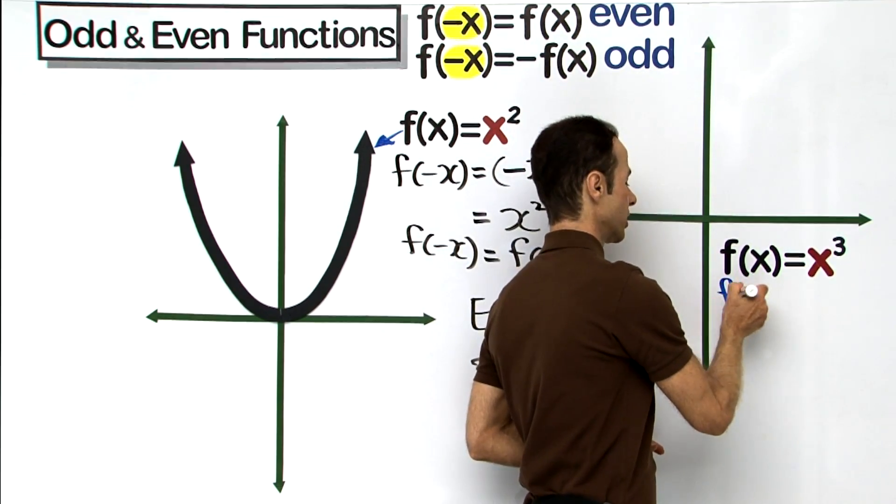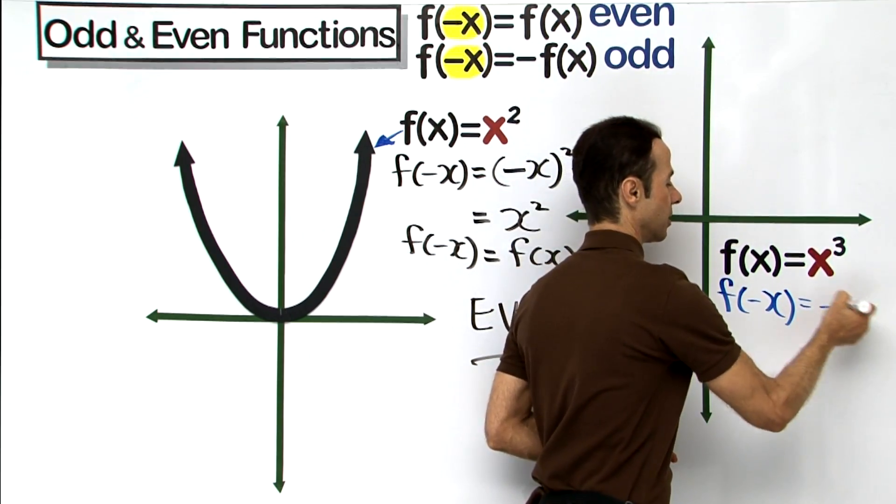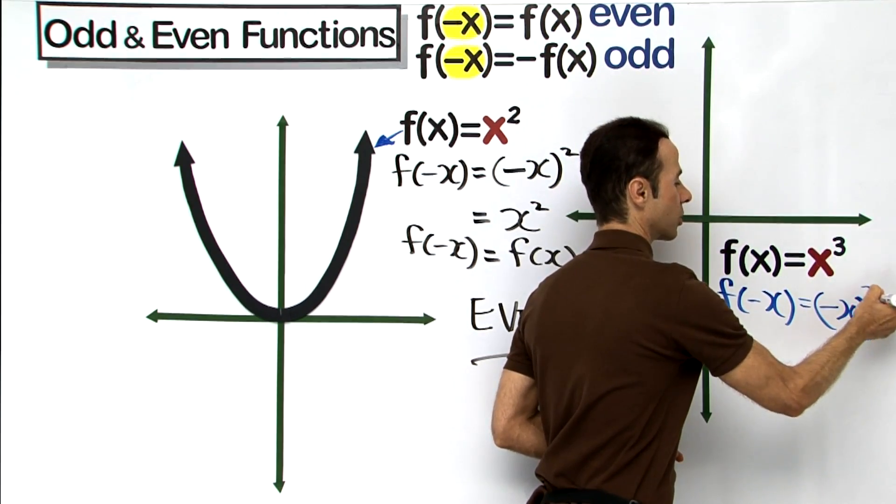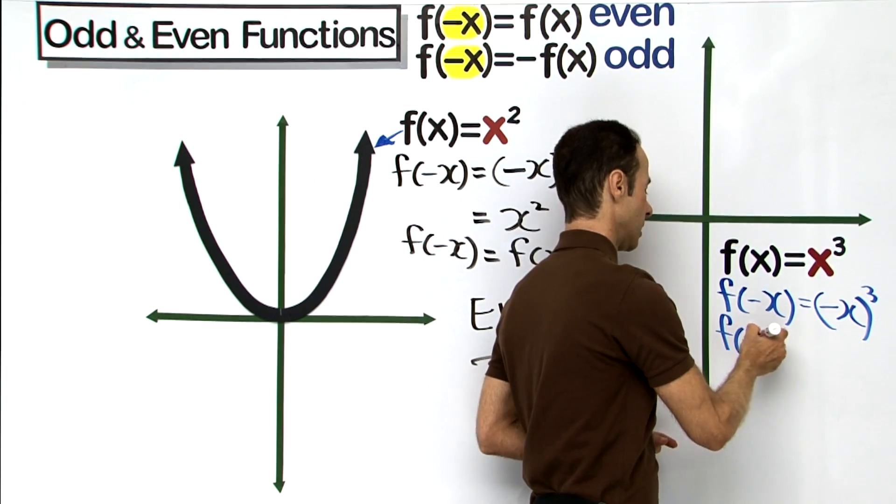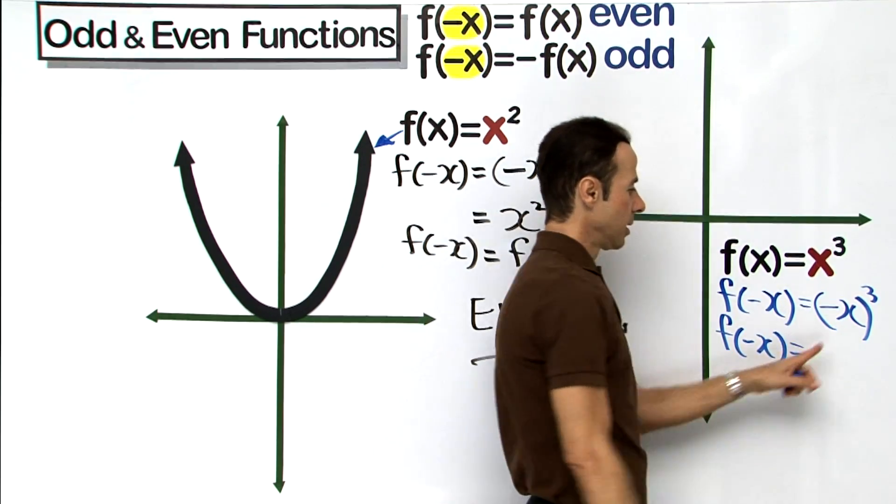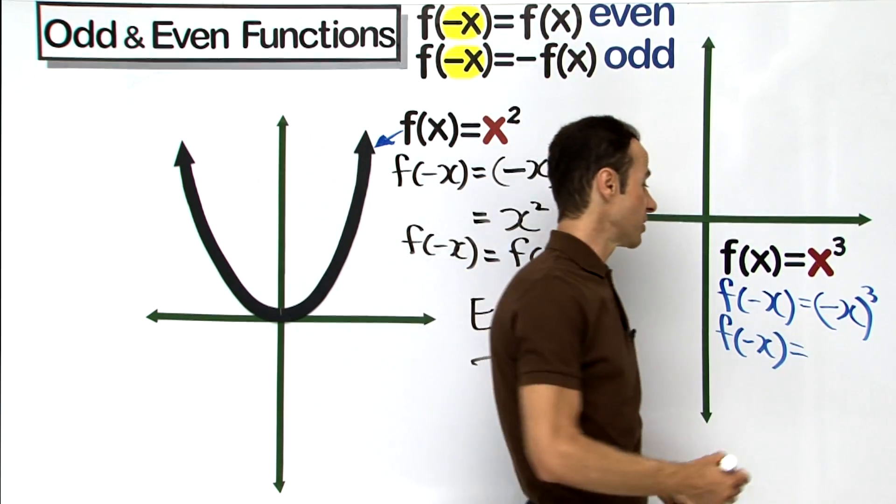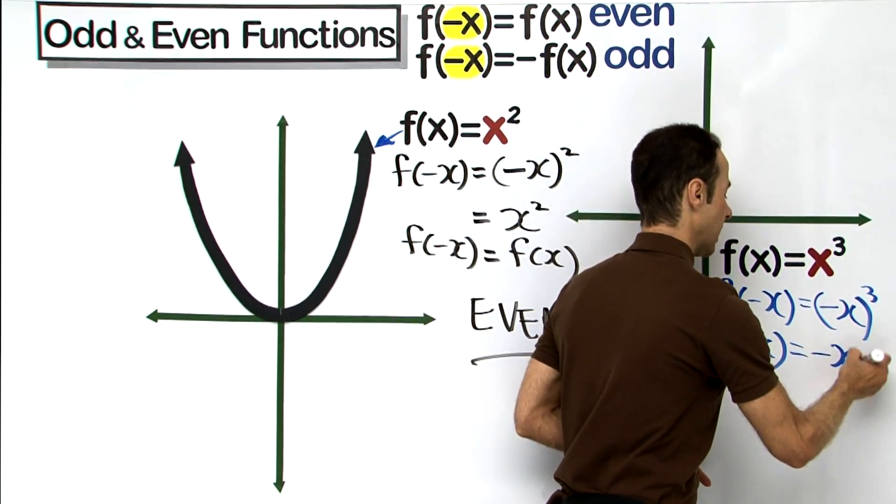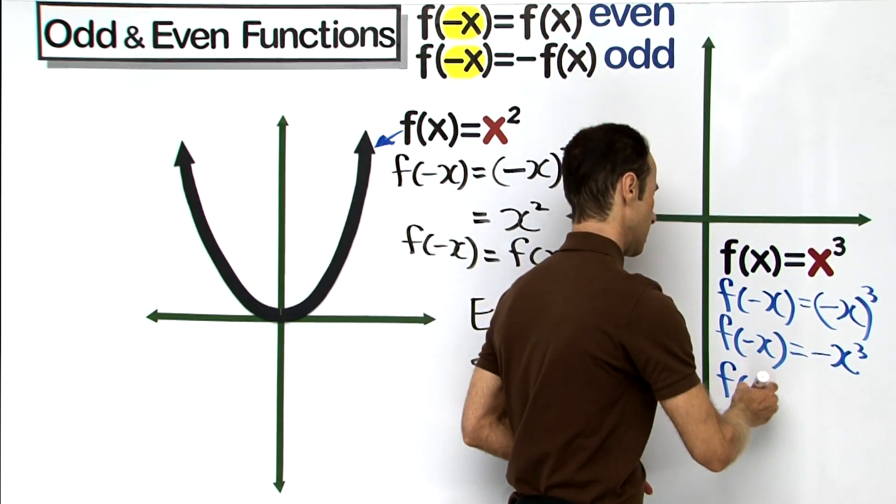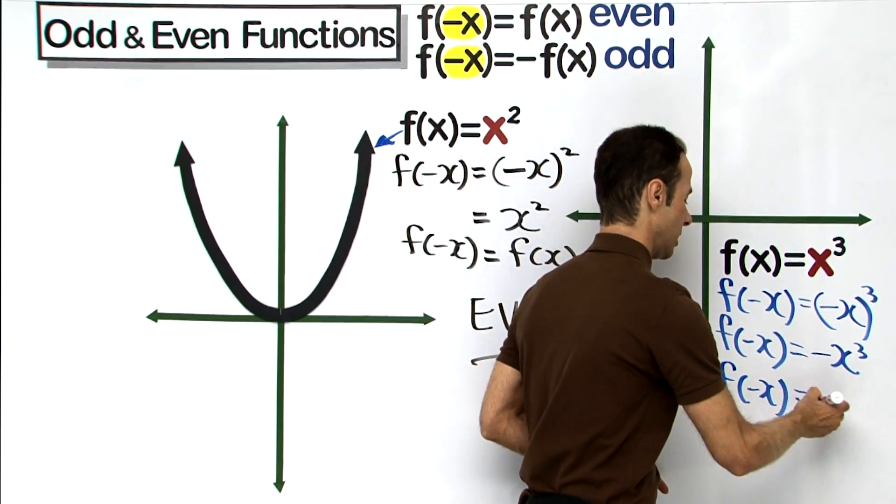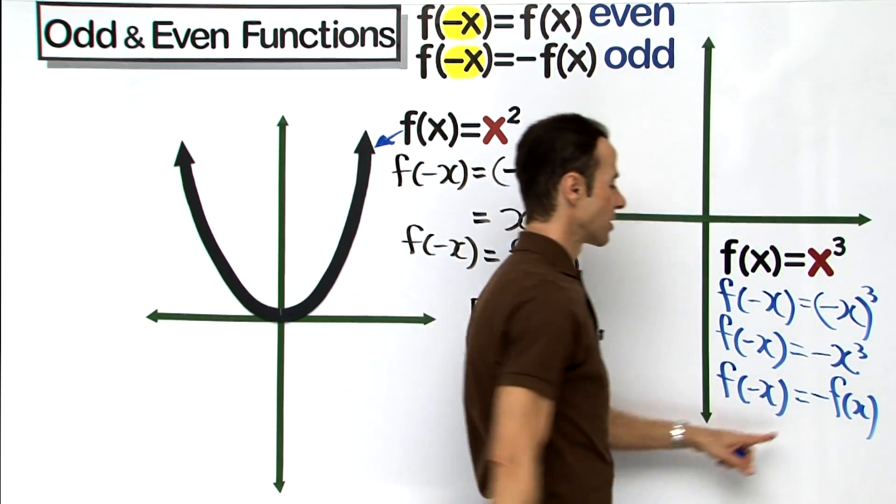So we will go f(-x) equals negative x cubed, to the power of 3. Therefore negative times negative times negative is going to turn out to be negative again, isn't it? So it is negative x cubed.